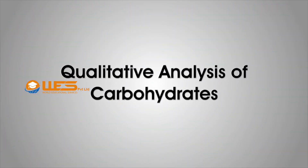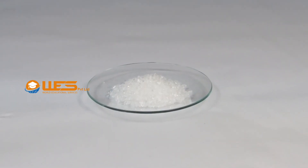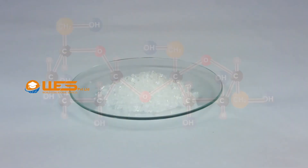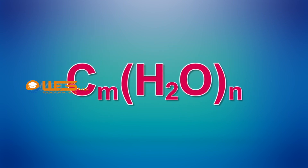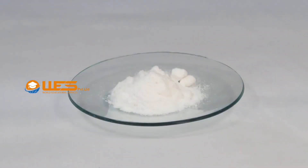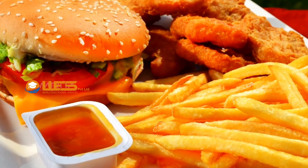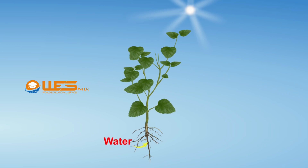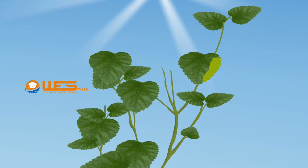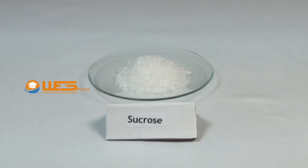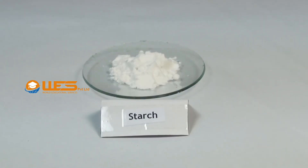Qualitative Analysis of Carbohydrates. Carbohydrates are large biological molecules consisting of carbon, hydrogen and oxygen atoms, having the general formula C_m(H2O)_n. Carbohydrates are one of the important nutrients present in our food. During the process of photosynthesis, carbohydrates are produced from carbon dioxide and water in the presence of chlorophyll and sunlight. Glucose, lactose, sucrose and starch are commonly known carbohydrates.